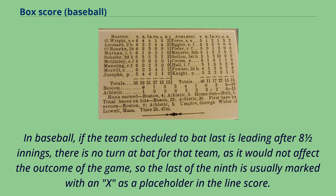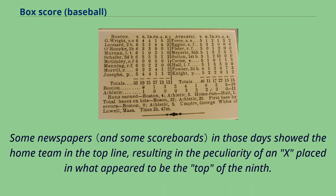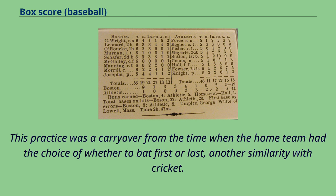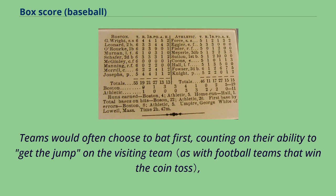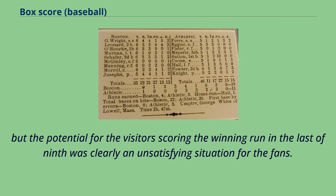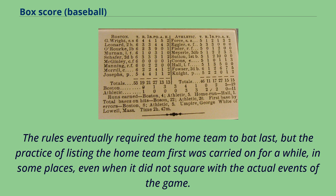In baseball, if the team scheduled to bat last is leading after eight and a half innings, there is no turn at bat for that team, so the last of the ninth is usually marked with an X as a placeholder in the line score. Some newspapers show the home team on the top line, resulting in an X placed in what appeared to be the top of the ninth. This was a carryover from when the home team had the choice of whether to bat first or last — another similarity with cricket. Teams would often choose to bat first, but the rules eventually required the home team to bat last.